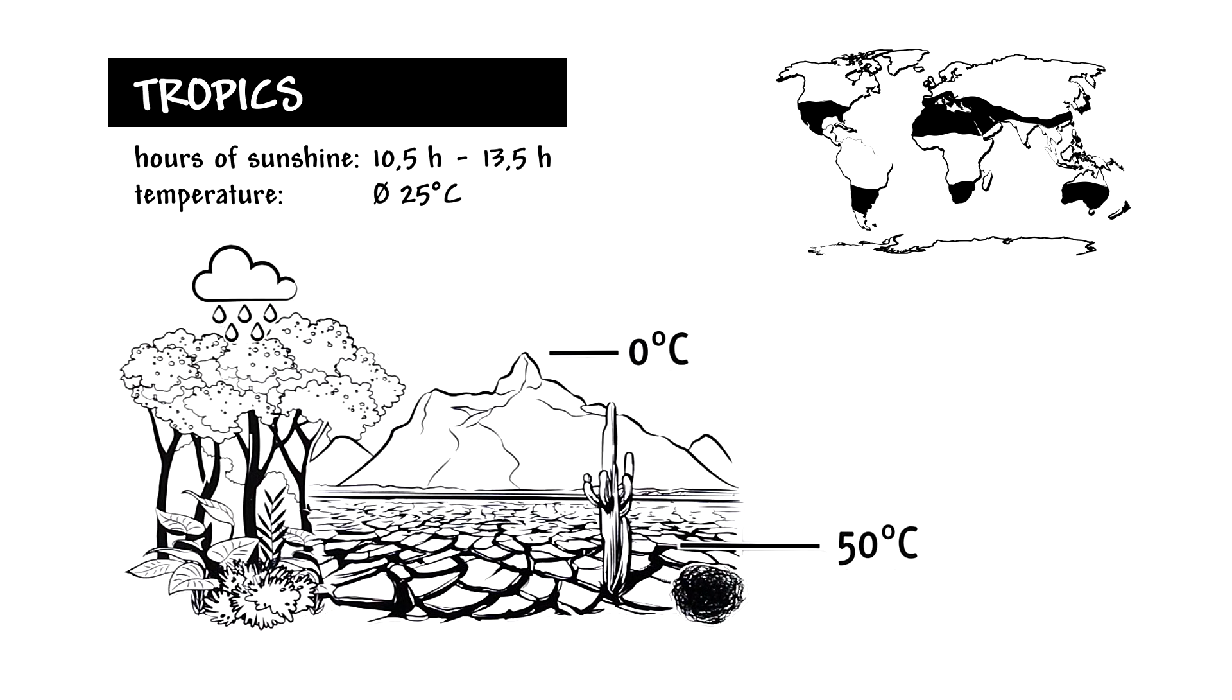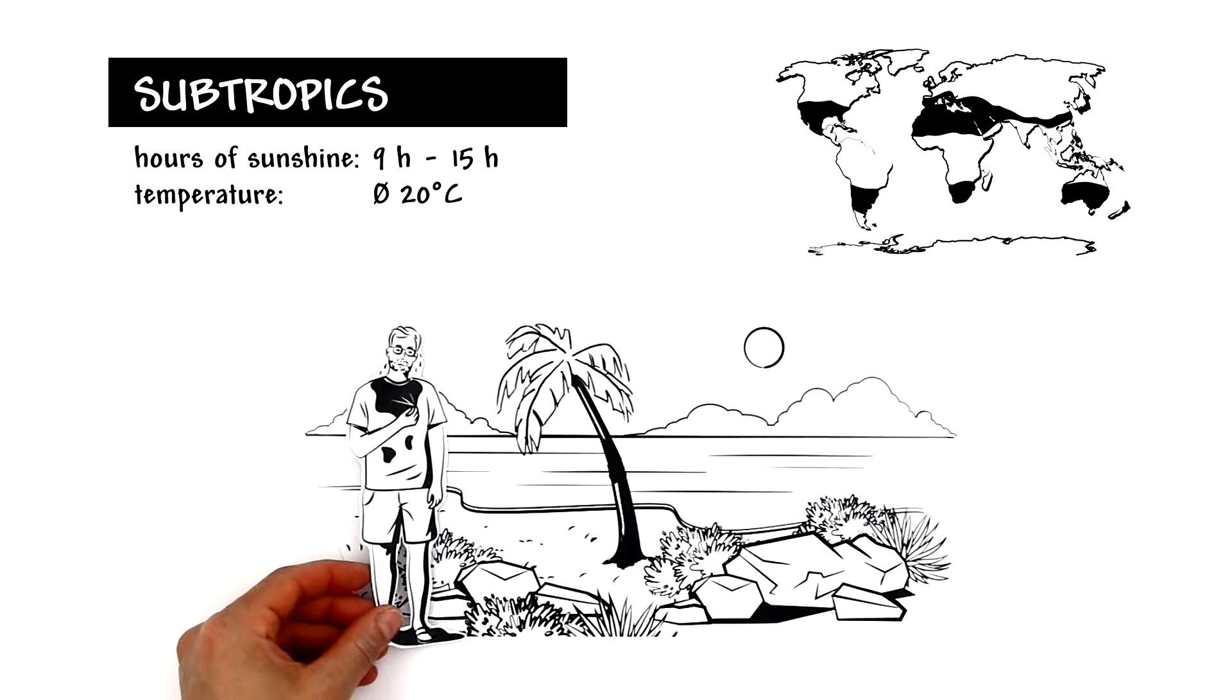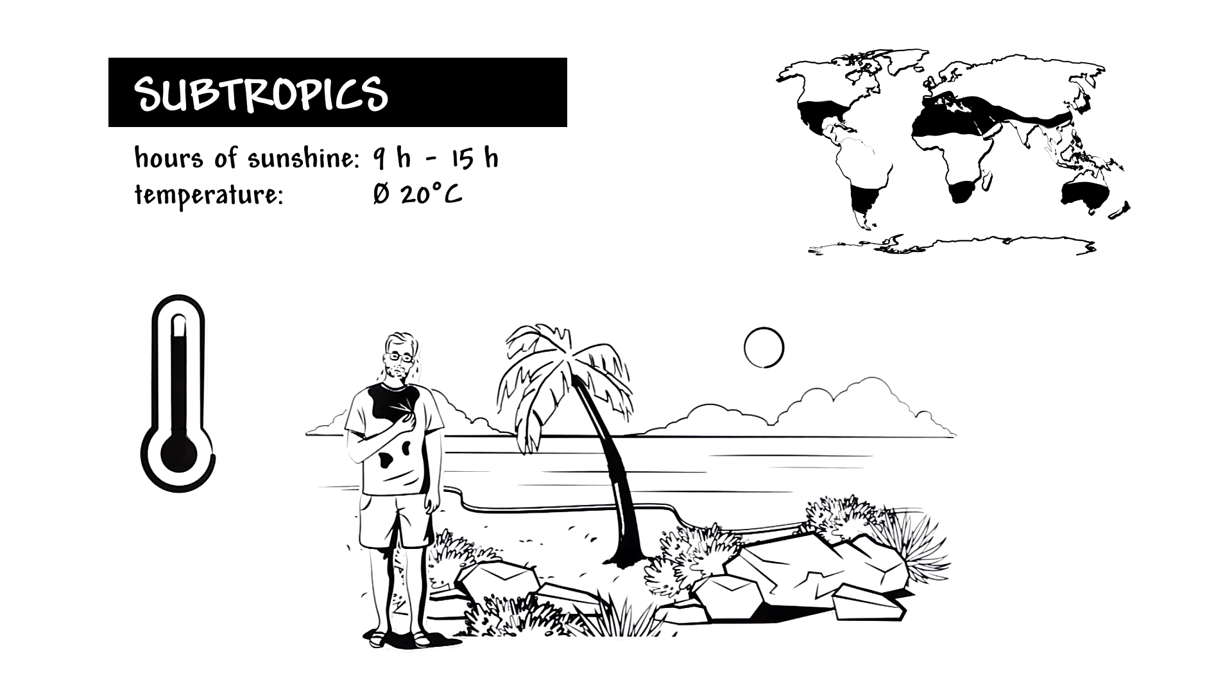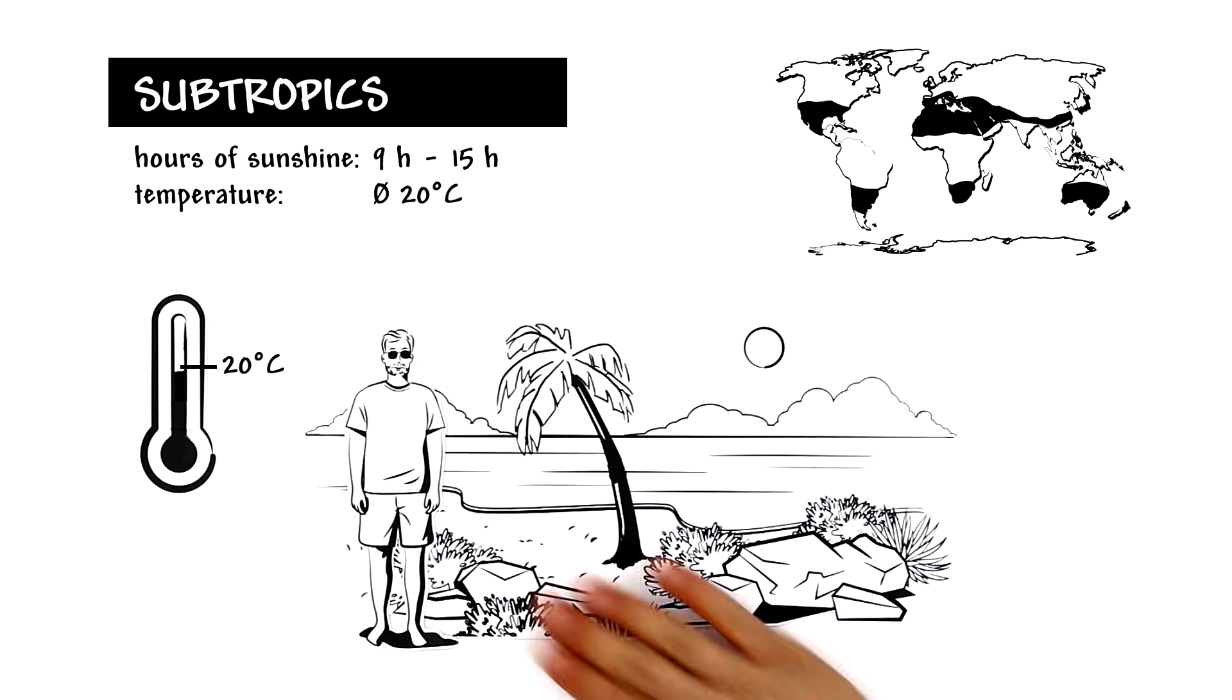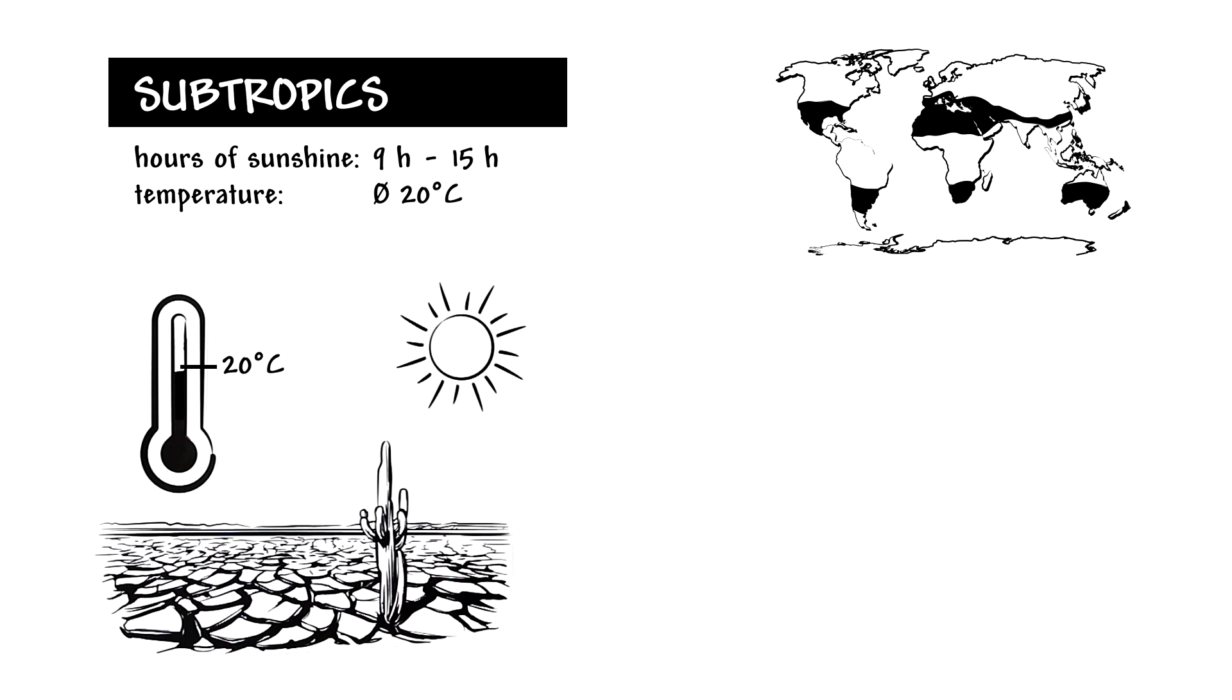Adjacent to the tropics are the subtropics. The summers are very hot, but the average temperature of the coldest month remains below 20 degrees Celsius. These subtropics include a number of deserts, as well as the Mediterranean region.